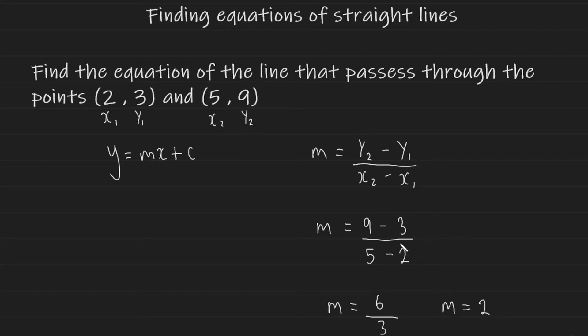So now that we found the gradient which is equal to 2, we can rewrite our equation as y equals, and instead of m I'm going to write down the actual gradient we found which is 2. I'm still going to write x as it is, and because we haven't found the y-intercept yet I'm just going to write it as plus c. So you are one step closer to finding the full equation of the line that passes through the given coordinates.